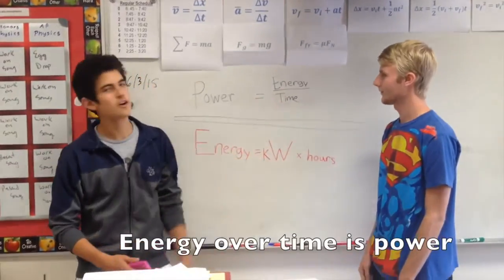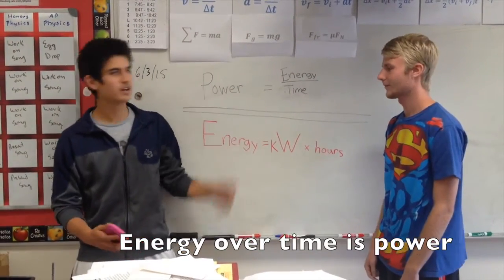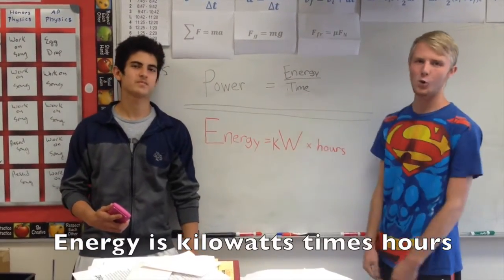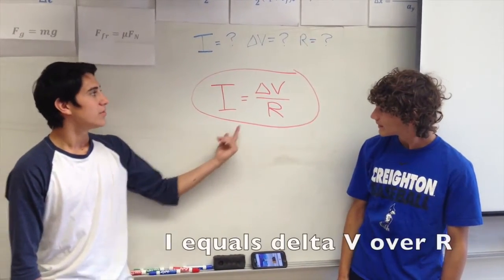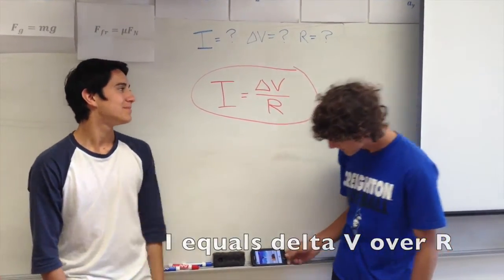Energy over time is power. Energy is kilowatts times hours. You want to find I, delta V, or R? I equals delta V over R.